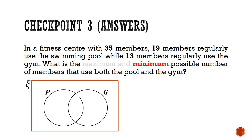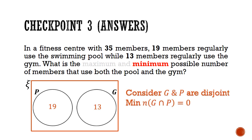On the other hand, to minimize the intersection of the two groups, we can have the two groups to have as little as possible to do with each other. And this is done by making the two sets disjoint sets. This allows us to make the minimum possible number to be zero. You have to be very careful here and check that the sum of the elements in set P and set G, which is 13 plus 19, is less than the total number of members, which is 35.